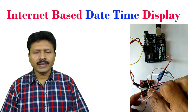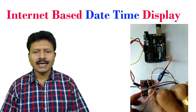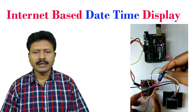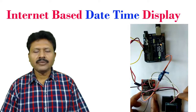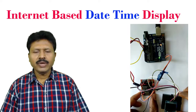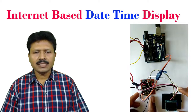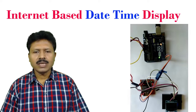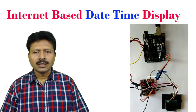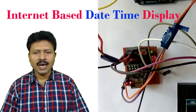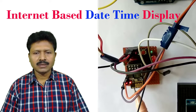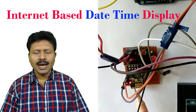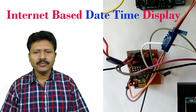To generate and show time, we may use hardware RTC. Different hardware RTCs are available like DS1307, DS3231, and PCF8563. But if we use those hardware RTCs, the accuracy of those is not so high, and different manual adjustments are required. In this tutorial, I will show how to get date and time from the internet.